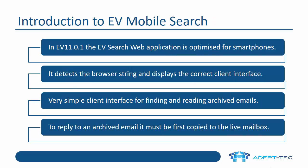In Enterprise Vault 11.0.1, one of the main new features was the EV Search web application, which is now optimized for smartphones and tablet use. It's not a mobile app — it's just literally a web application. What it does is detect the browser string and display the correct client interface. It's a very simple interface for finding and reading archived emails.